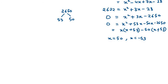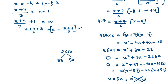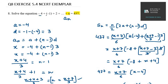We reject the negative value minus 53. Notice how in the AP the terms start negative but keep increasing, becoming positive — so the last term x must also be positive. We reject x equals minus 53 and keep x equals 50. You need to observe the AP to decide which value to reject and which to keep — since the terms go from negative to positive, we keep the positive value 50.